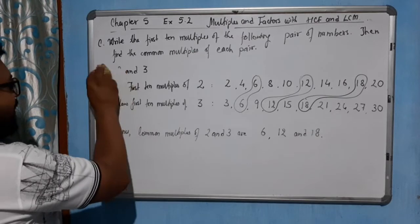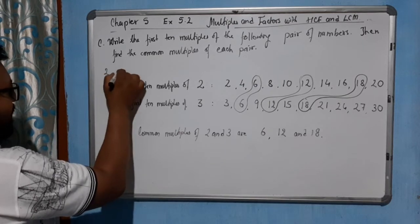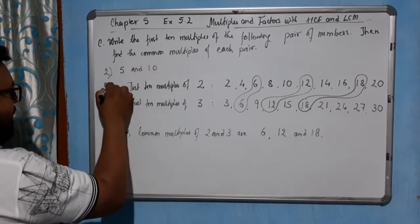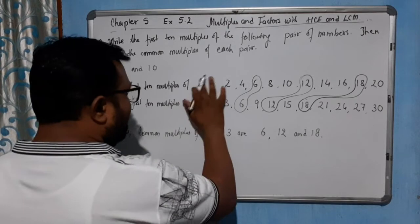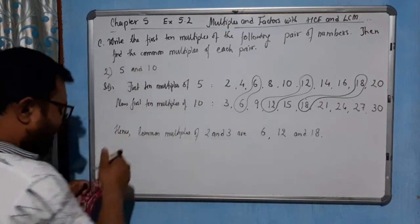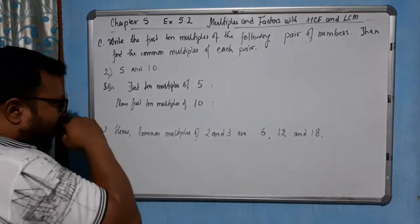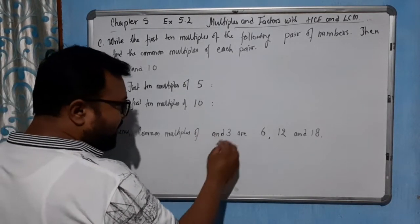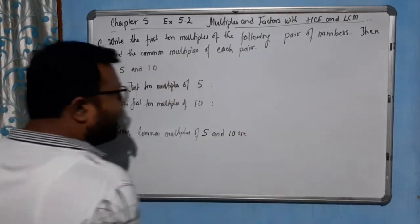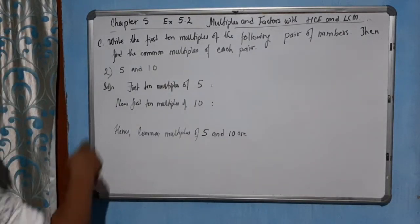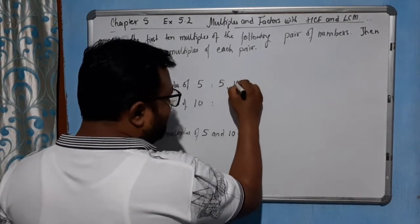Next one: 5 and 10. Same thing — you will write the first 10 multiples. I will write 5 here. I will leave the previous part as it is, similar to what we did for 2 and 3. Now I will write 5 and 10 here, and let's see how much we will get. The first multiple of 5: 5×1=5.